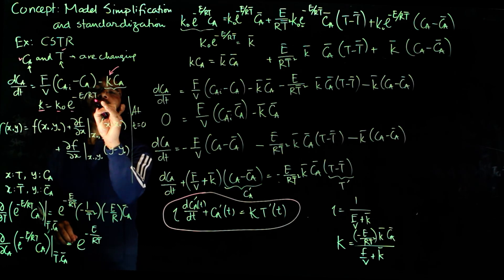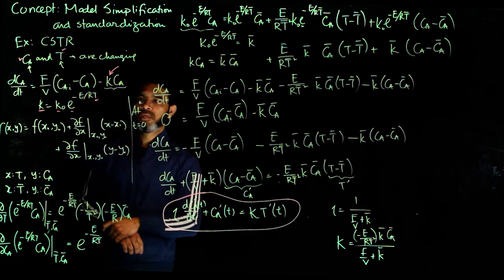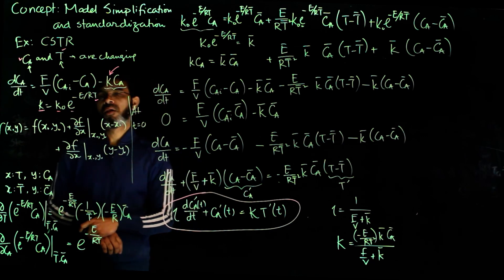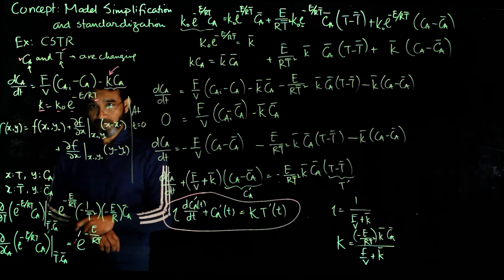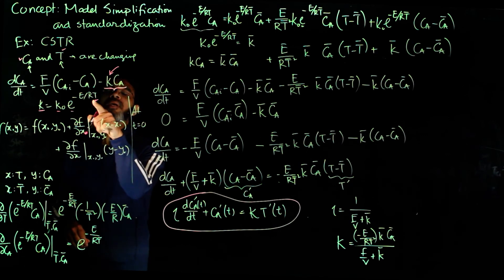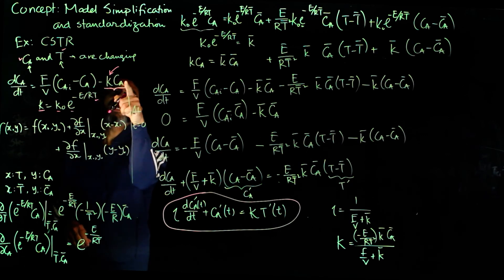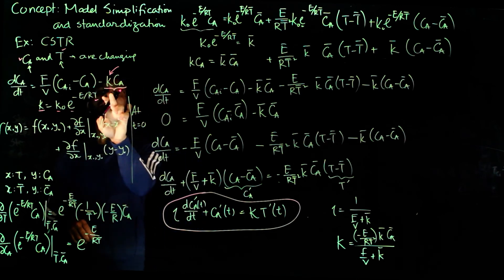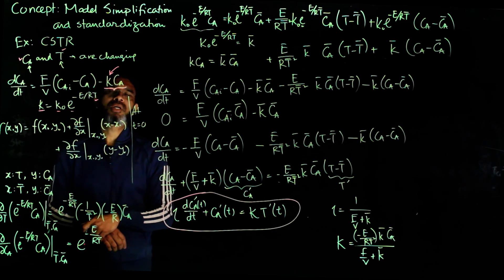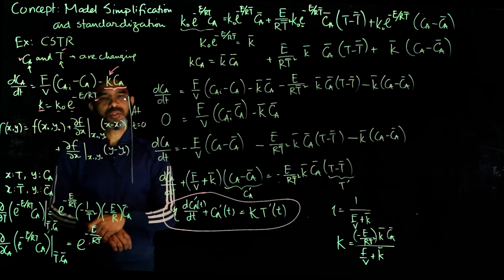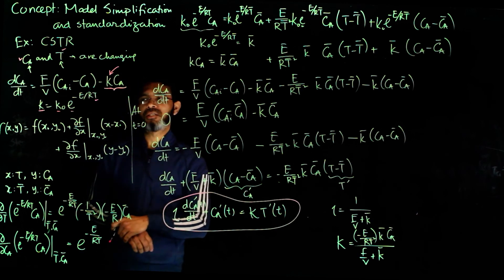This equation should be familiar from your process kinetics or reaction kinetics course. We have both the temperature implicitly and the composition in this term, coming as a multiplication of two terms. That's the nonlinear appearance, so we need to linearize that term.